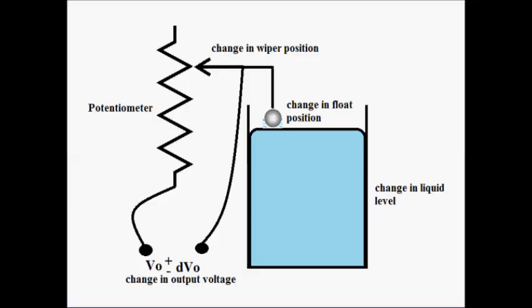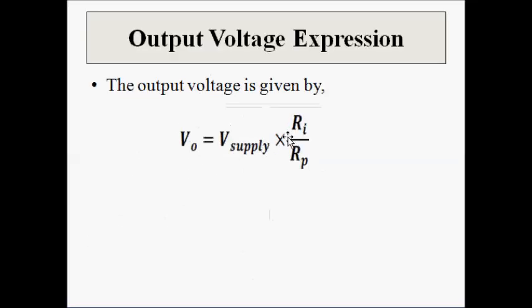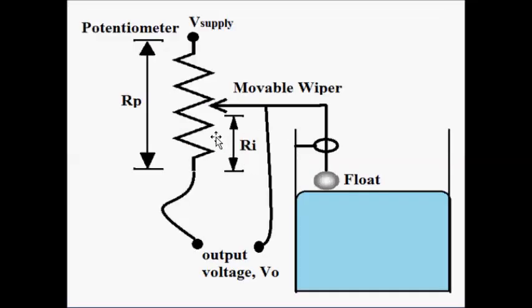The output voltage expression is determined by the voltage division rule, which we studied in the potentiometer video. The output voltage is given by: Vo = V_supply × (Ri / Rp), where Ri is the instantaneous value of the output resistance determined by the wiper position — which is directly related to the float position. So the liquid level controls the output resistance, which in turn determines the output voltage, giving a direct connection between liquid level and output voltage.